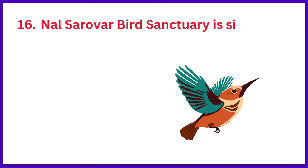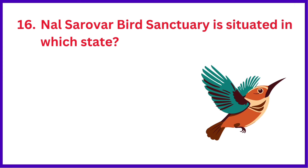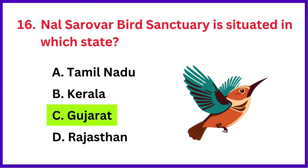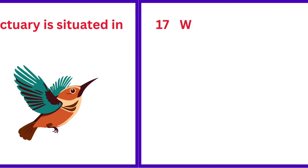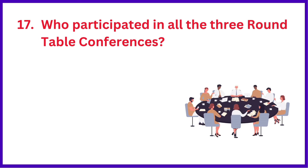Nal Sarovar Bird Sanctuary is situated in which state? The correct answer is option C: Gujarat.